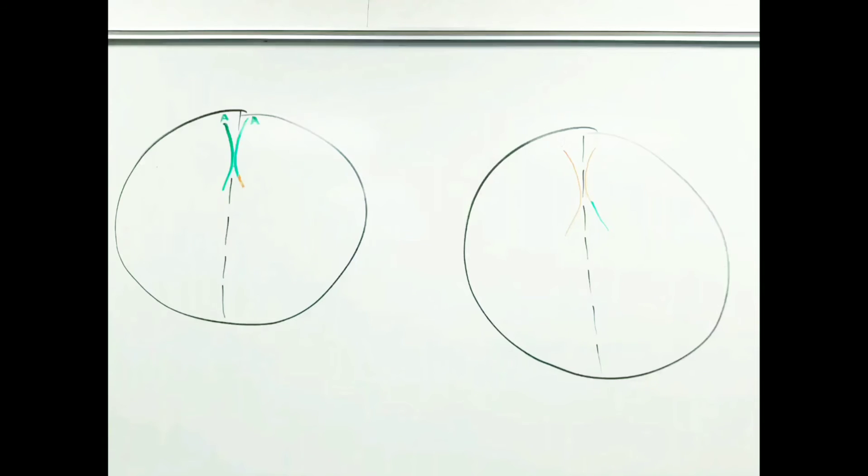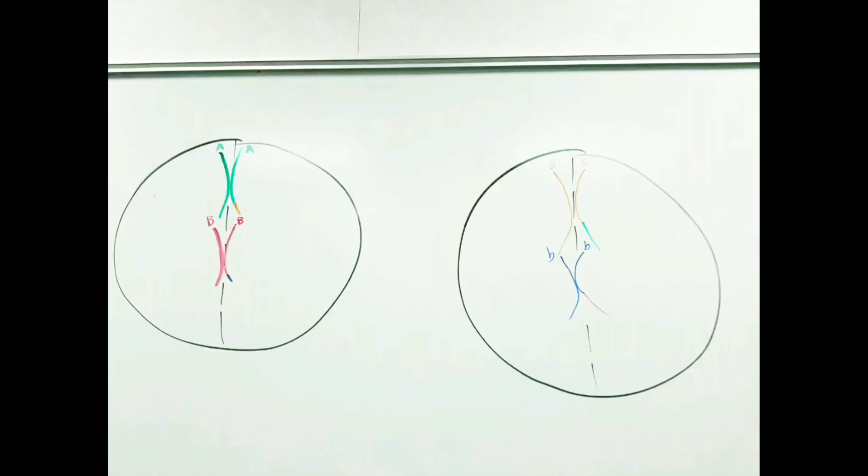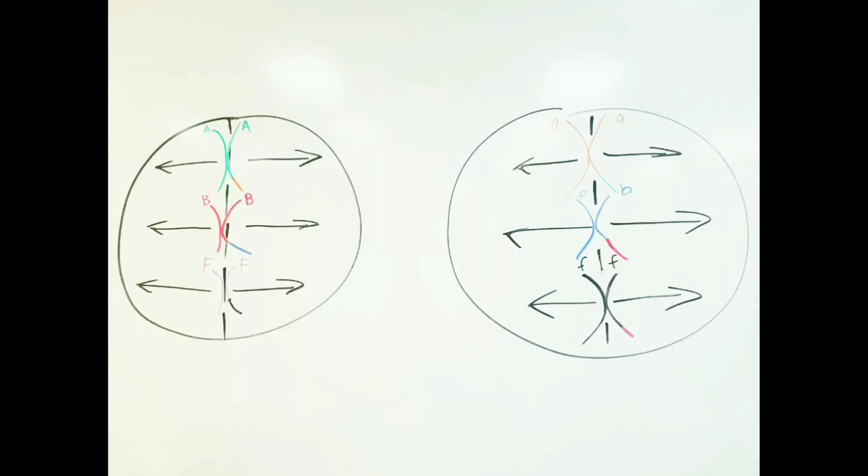The chromosomes of each cell will line up in the middle, and spindle fibers will attach to the centromeres. The spindle fibers will pull each sister chromatid from the chromosomes to opposite sides of the cell.